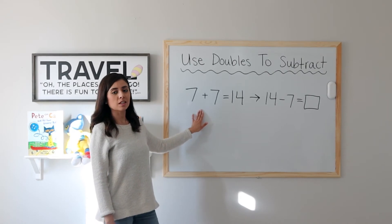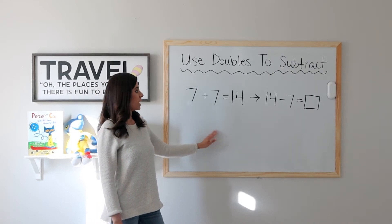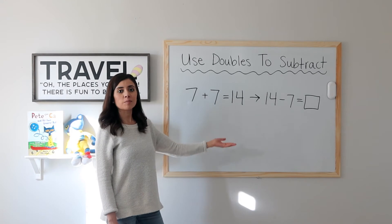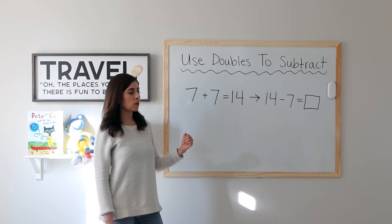7 plus 7 equals 14. I will use this doubles fact to find 14 minus 7 by reading it backwards as a subtraction problem.